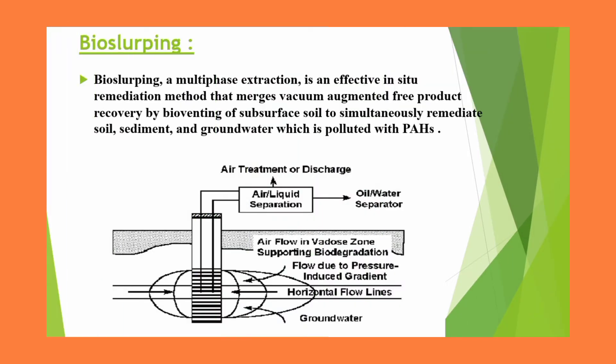The second example of engineered in-situ bioremediation is bio-slurping. Bio-slurping is a multi-phase extraction process and an effective method. It merges vacuum-augmented free product recovery by bio-venting of subsurface soil to simultaneously remediate soil and groundwater polluted with poly-aromatic hydrocarbons. This is not only for soil but also for sediments and groundwater polluted from poly-aromatic hydrocarbons.